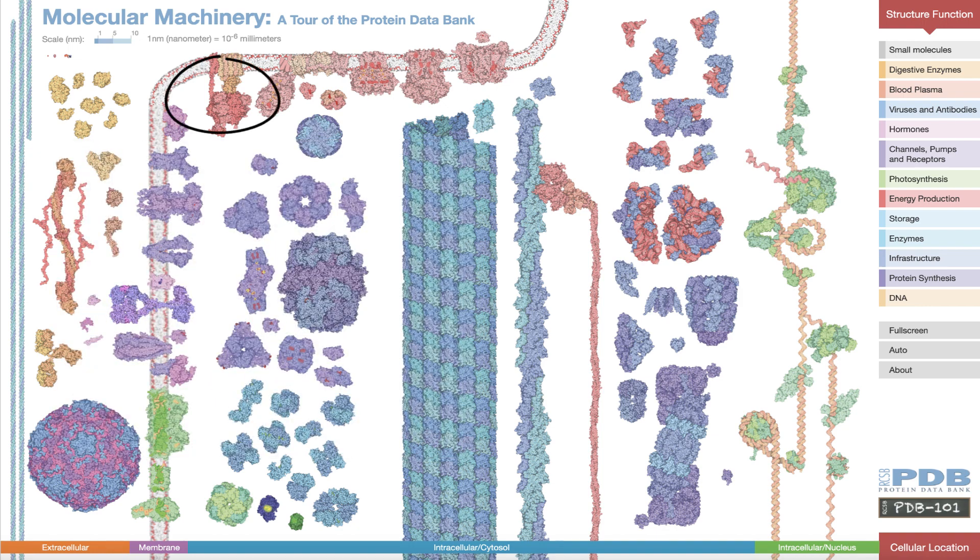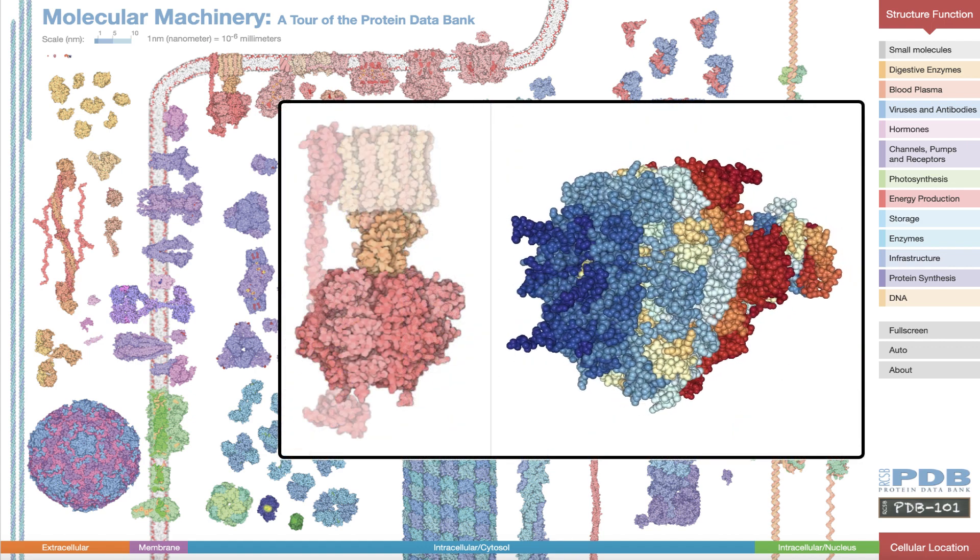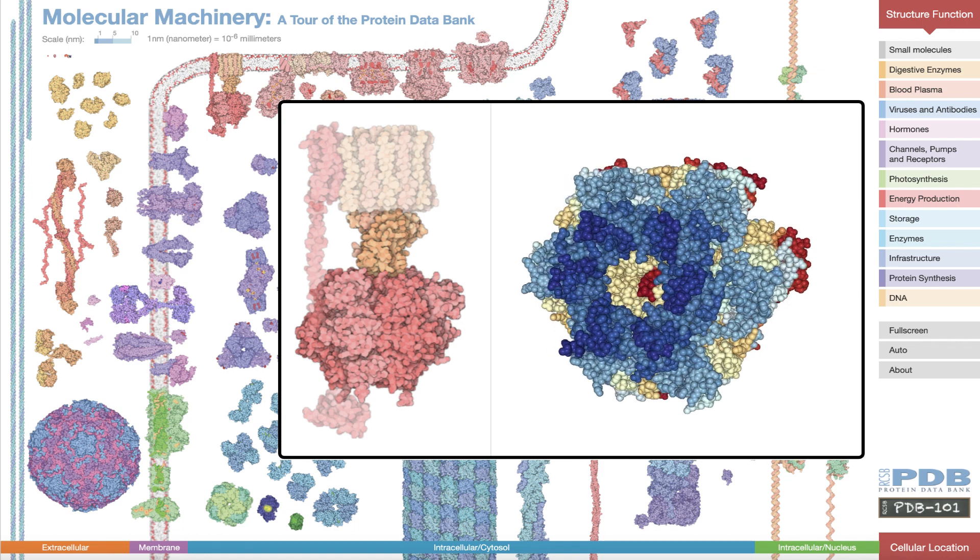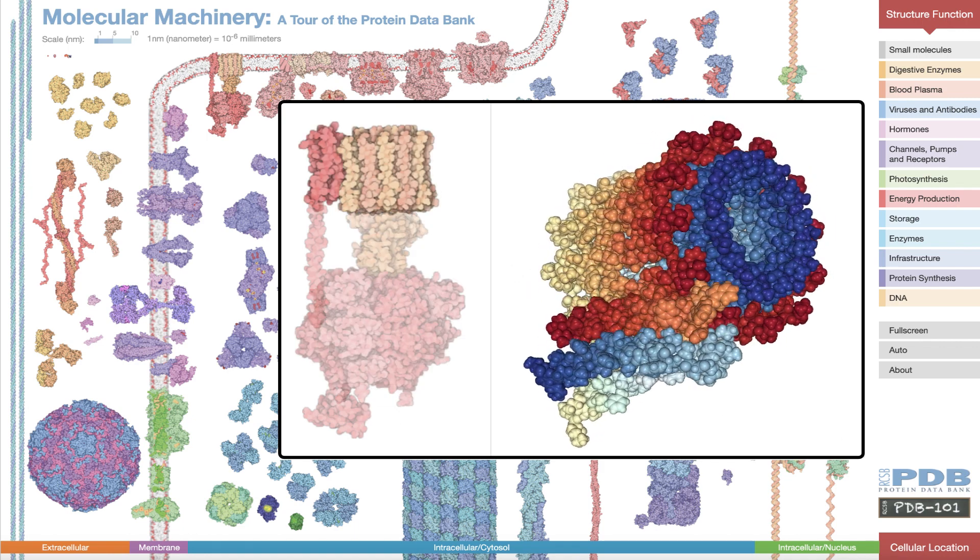Many proteins in the PDB have multiple domains connected with flexible linker regions. Instead of studying the structures of the entire protein, scientists often selectively study regions or domains of the protein that are structurally stable and functionally important.